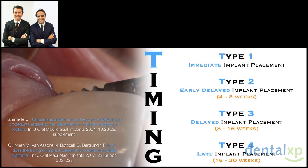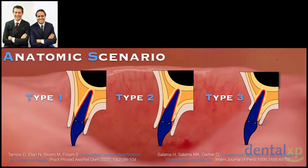First of all we have timing options, and this is one of the most important and well-known consensus conferences that everybody refers to, because the timing depends on when we extract the tooth and when we place the implant. We have Type 1, Type 2, Type 3, and Type 4. Type 1 is immediate implant placement — we extract the tooth and immediately place the implant. Type 2 is the early delayed implant placement, 4 to 8 weeks after extraction, which is the Buser and Belser favorite approach. Then we have Type 3 and Type 4 at 8 to 16 and 16 to 20 weeks later.